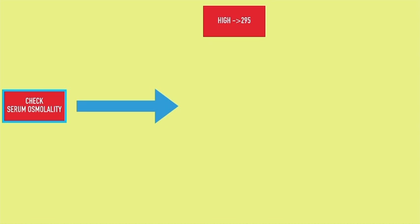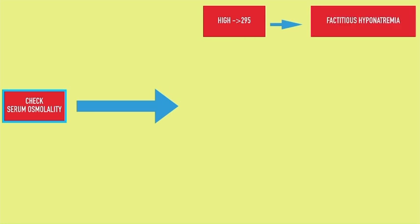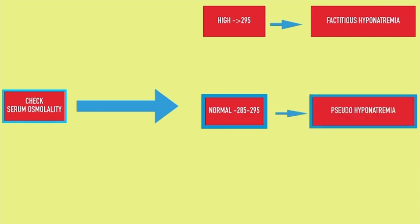If you get high osmolality — that is serum osmolality more than 295 — this is called factitious hyponatremia. If the serum osmolality is normal, that is 285 to 295, this is called pseudo hyponatremia. If the serum osmolality is low, that means less than 285, this is called true hyponatremia.